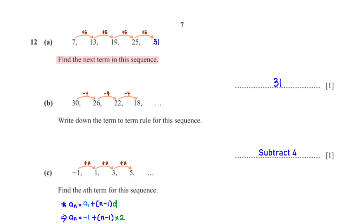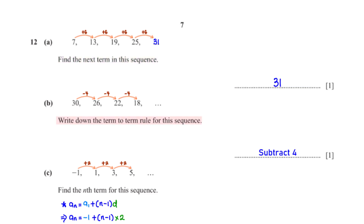Find the next term in this sequence. When we look at the given sequence, we see that the terms have a constant difference of 6. So to get the next term, we add 6 to 25. This gives us 31. Write down the term to term rule for this sequence. For this sequence, we see that the term to term rule is subtract 4.